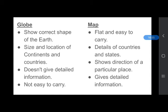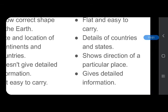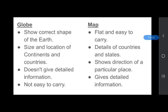A globe doesn't give detailed information and is not easy to carry. A map is drawn on a flat surface, easy to carry, and can be folded — it is good for traveling. Maps show details of countries and states, and a map shows the direction of a particular place: we can find North, West, East, and South on a map easily, but not on a globe. Maps give detailed information.